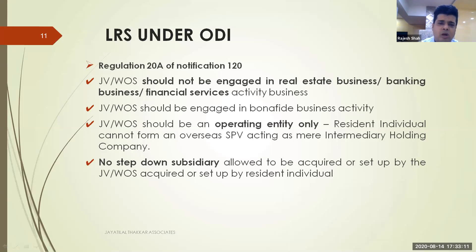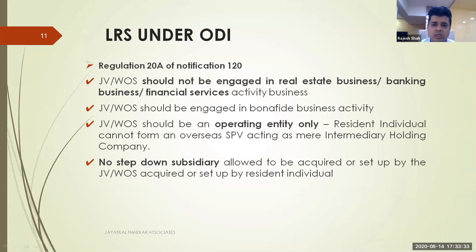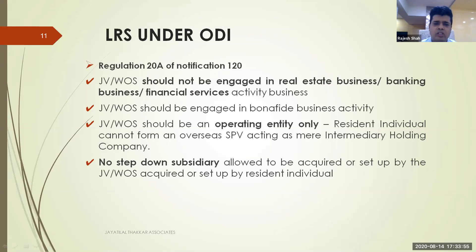Under Regulation 20A, an Indian individual can set up a company abroad, enter a joint venture (JV), or establish a wholly owned subsidiary (WOS). Three friends or family members can come together and create a WOS abroad. Key restriction: the company cannot be in real estate business, banking business, or financial services — these three main areas are not allowed. The foreign company, JV, or WOS must be engaged in bona fide business activity only.